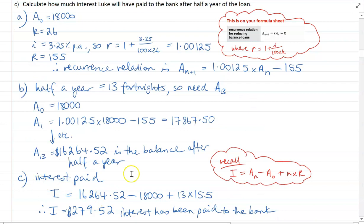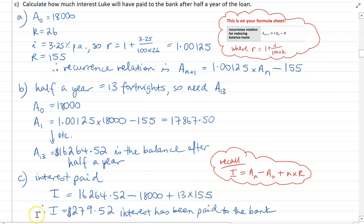Moving on to Part C to work out the interest paid. That's the current balance minus the initial value that was borrowed, plus the number of repayments made times the repayment value. So $16,264.52 minus the amount borrowed, plus those payments — that gives us interest paid to the bank of $279.52.